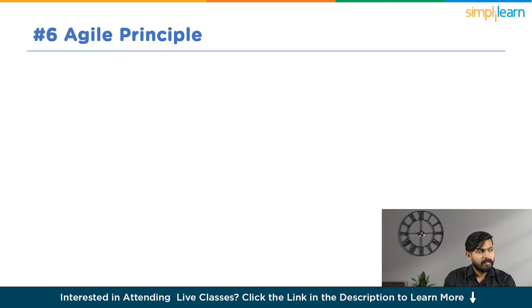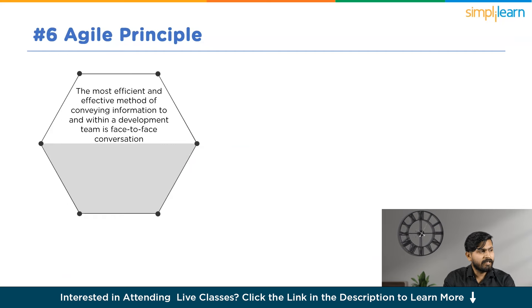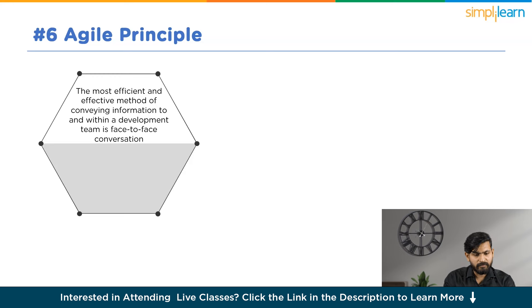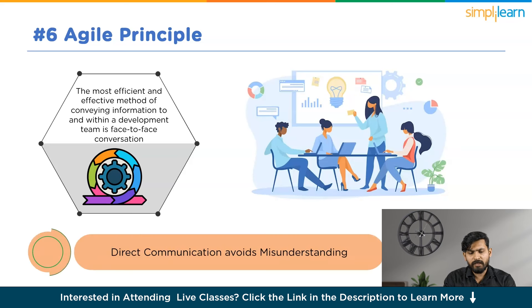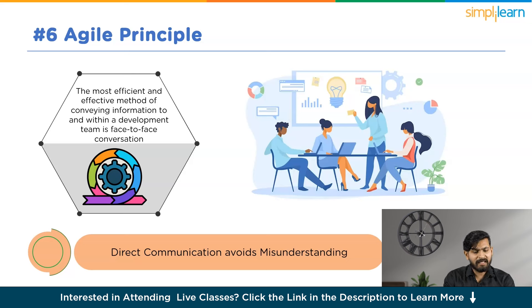Now let's discuss our sixth Agile Principle: the most efficient and effective method of conveying information within a development team is face-to-face conversation. In the context of the growing prevalence of distributed or remote development teams, effective communication between product teams and developers remains essential. The core idea is to move conversations beyond written platforms like Slack and email, emphasizing more human interaction.